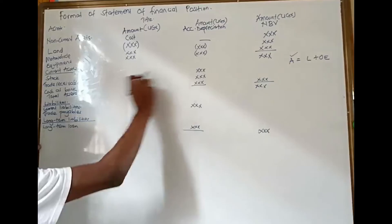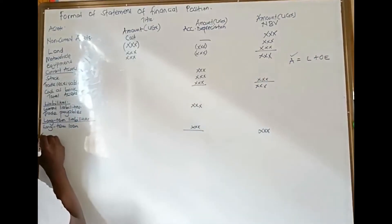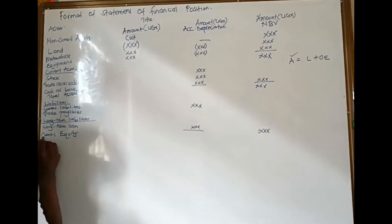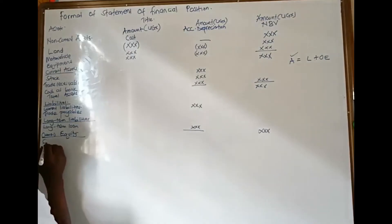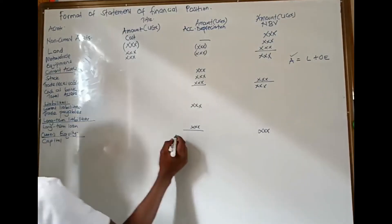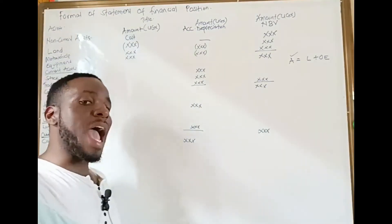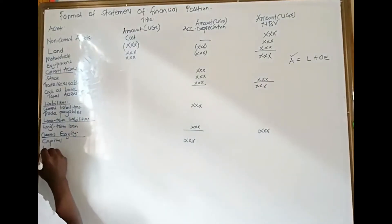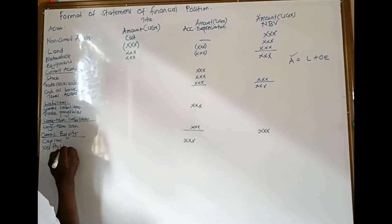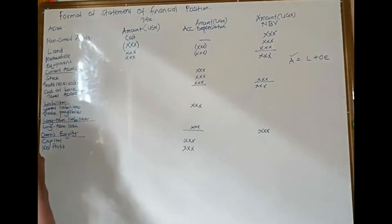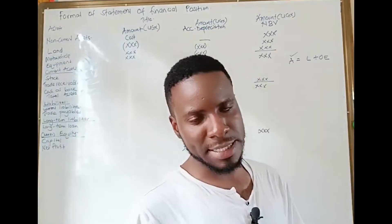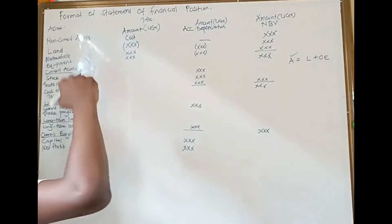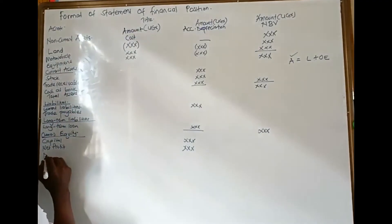After liabilities, we come to owner's equity. Under owner's equity we have capital — we bring it in. Then we add the net profit obtained from the income statement. If there are any drawings in the business — amounts the owner withdrew — we subtract them because drawings reduce owner's equity. If it was a net loss instead of net profit, we would subtract it; but for net profit, we add it.